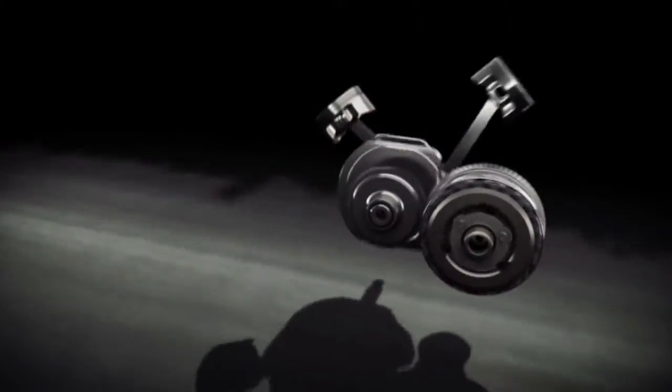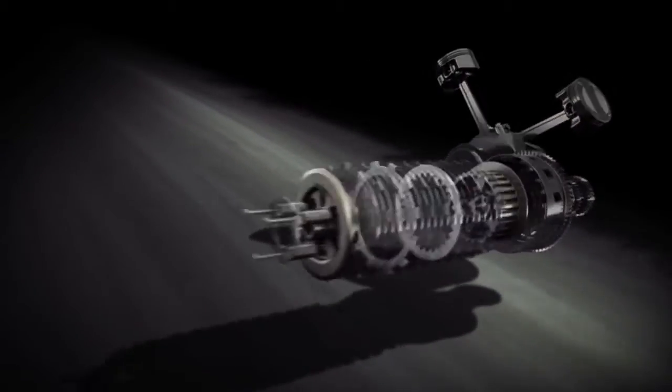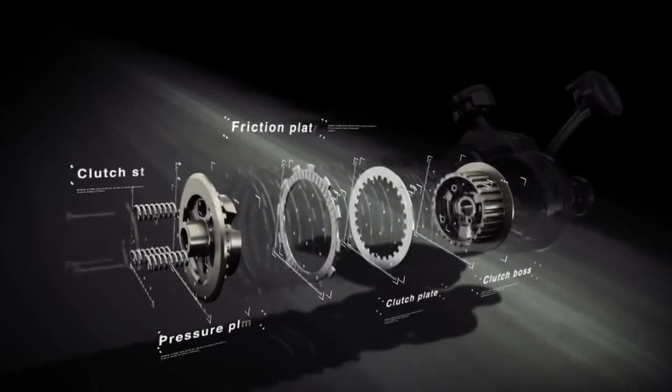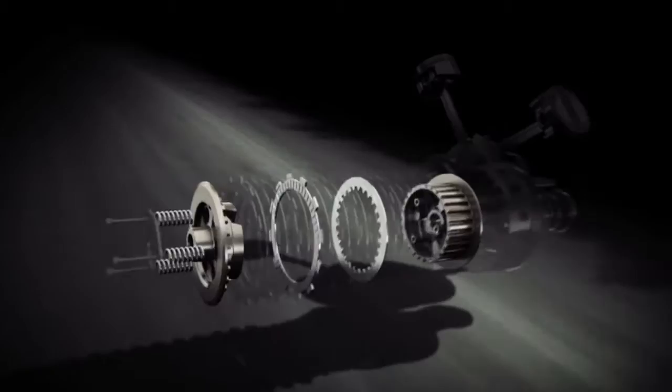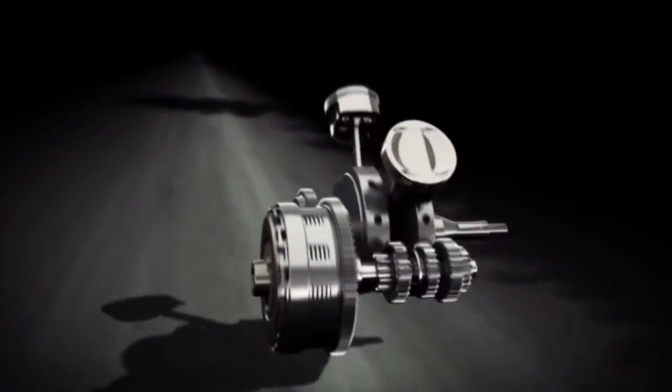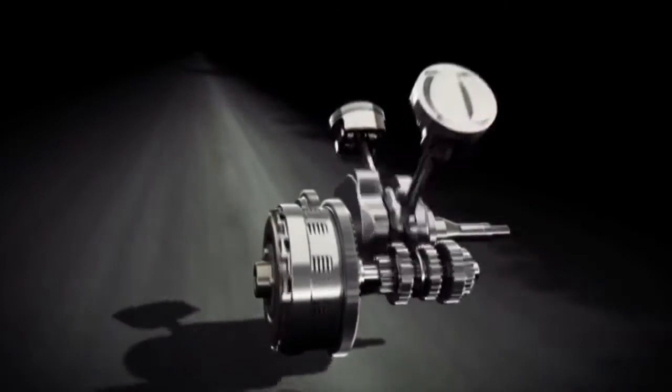And although this new design includes clutch springs, a pressure plate, friction and clutch plates, and a clutch boss like a conventional manual clutch, the new assist and slipper clutch design reinvents these parts to deliver several performance advantages over the conventional clutch.